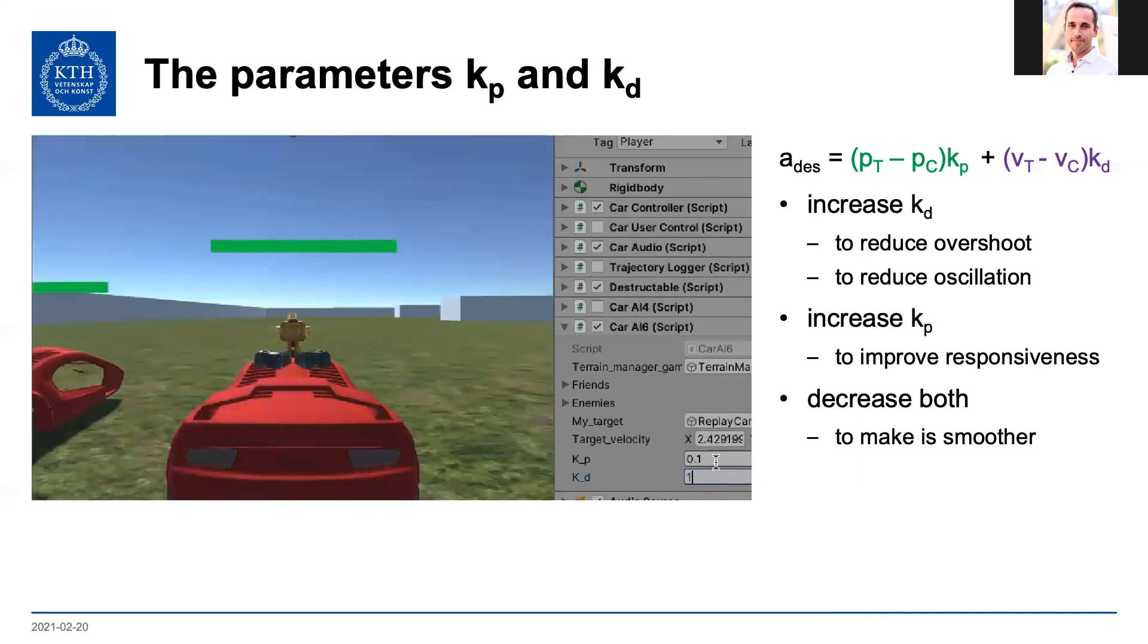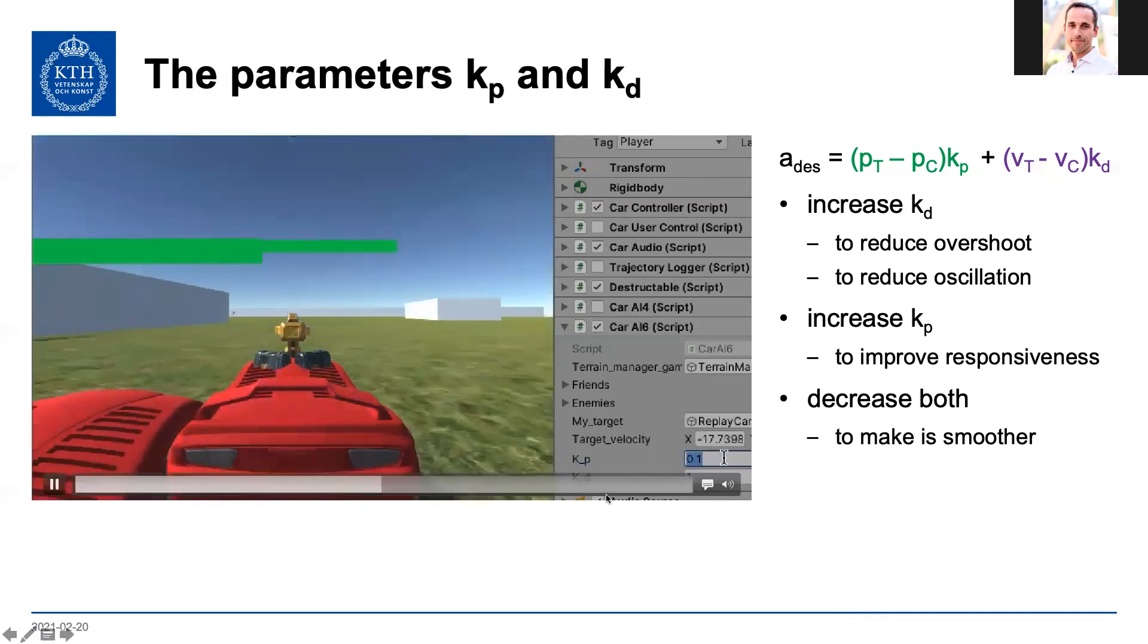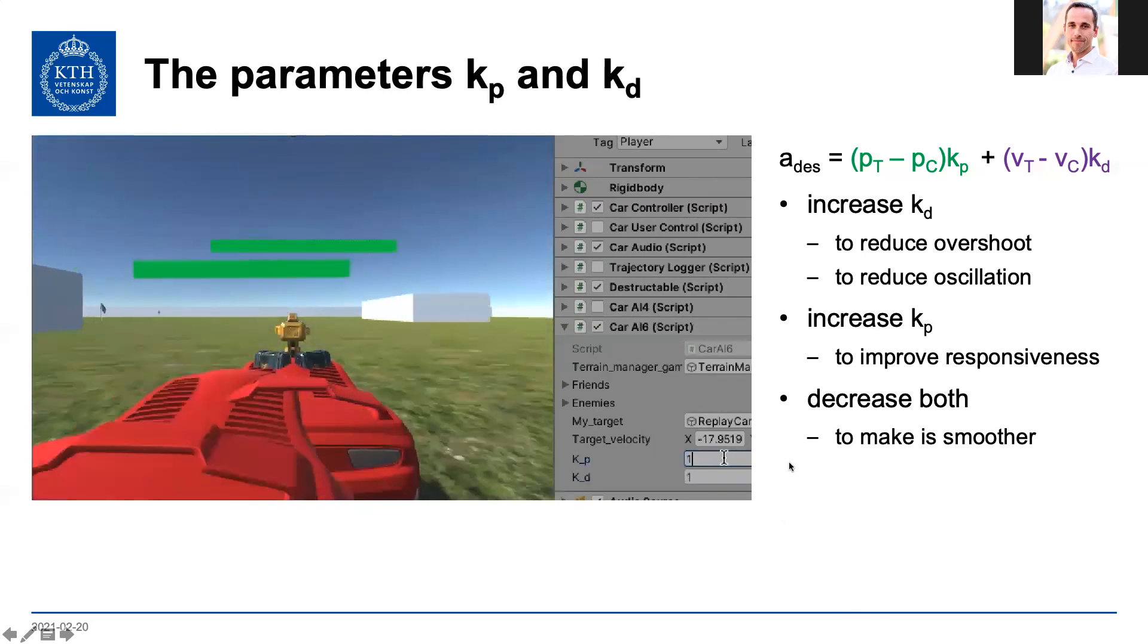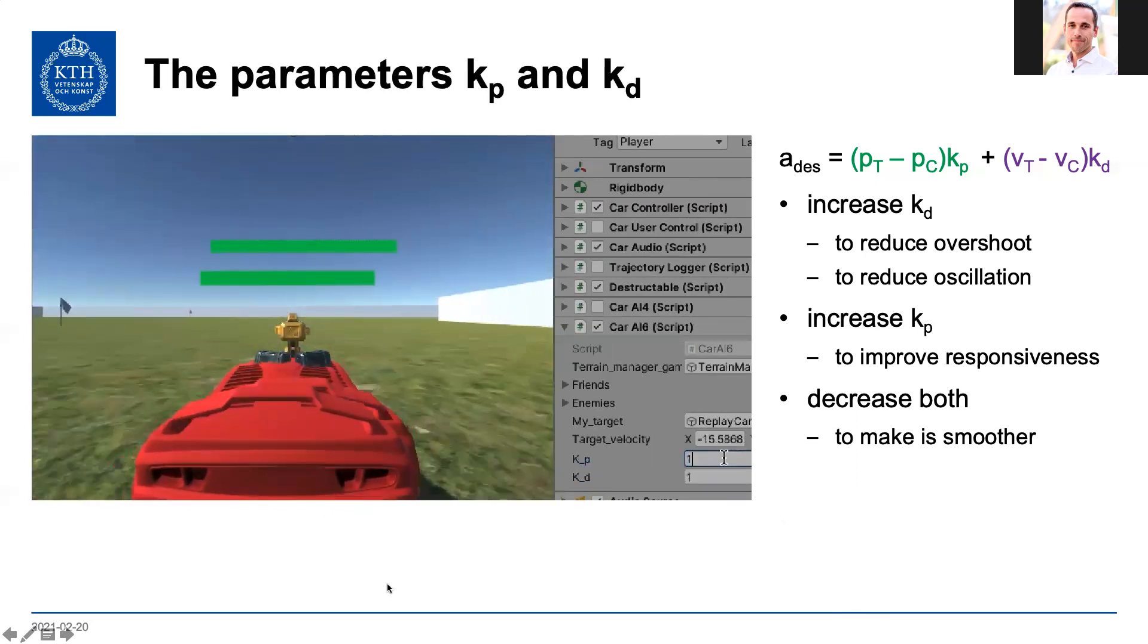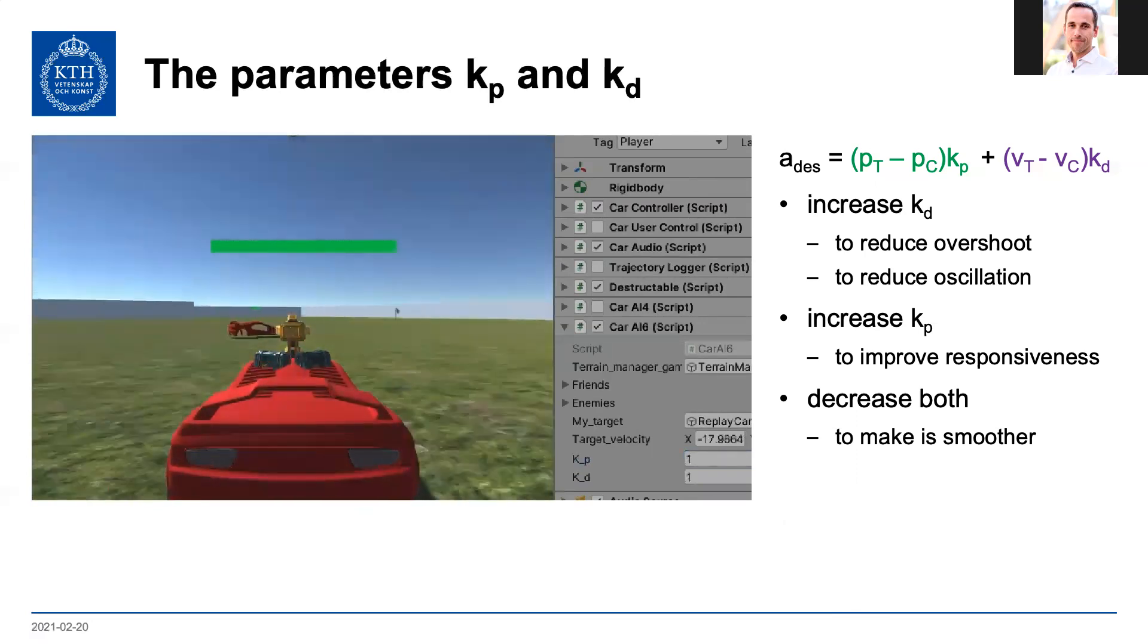But you can see there's kind of an error here that decreases very slowly. So we're going to bump up kp to one as well. And now you can see that the position error also decreases in a nice fashion.